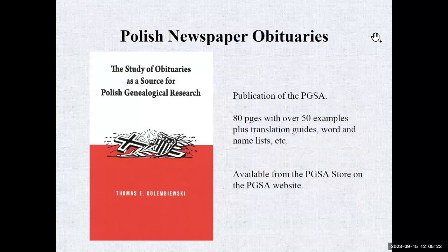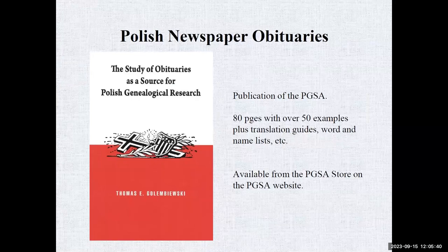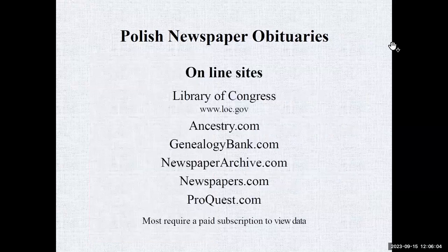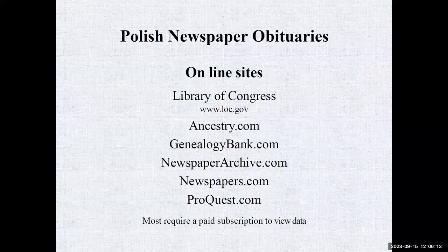The PGSA publishes a book on the study of obituaries — over 80 pages with more than 50 examples, translation guides, and word lists. You don't need to know Polish to read an obituary, particularly with a good guide; they are very formulaic. This is a good way to get information, particularly from immigrants or first-generation immigrants, as many of the original family members will be noted. Obituaries can also be found at the Library of Congress, Ancestry, and newspaper archive sites like ProQuest.